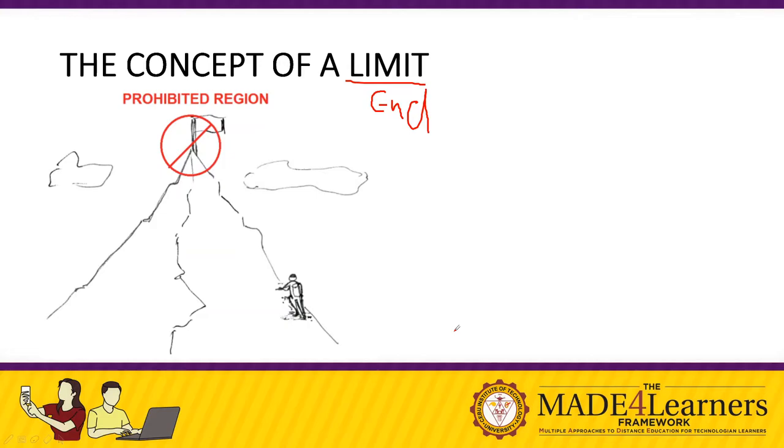For a clear picture of this concept, let's try to imagine that we are mountain hikers and we're trying to climb the highest mountain in the world, Mount Everest. You want to experience the mountain as what climbers always say, that for you to experience the entire mountain, you need to reach the peak. However, Mount Everest is a very dangerous place and it happens that the peak itself is a prohibited region.